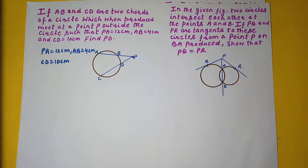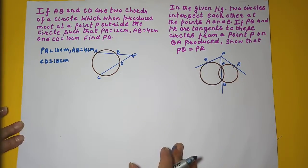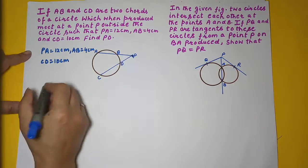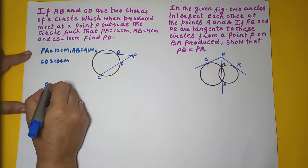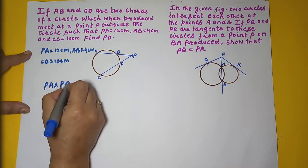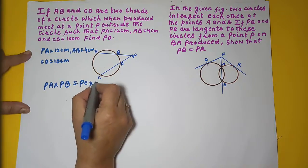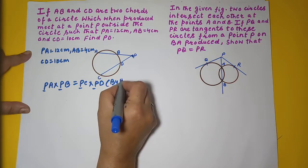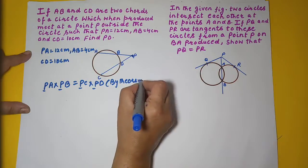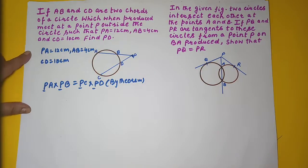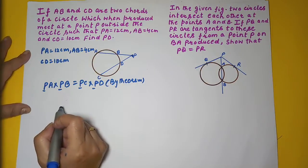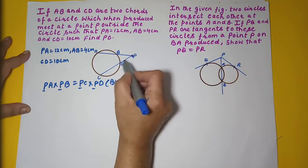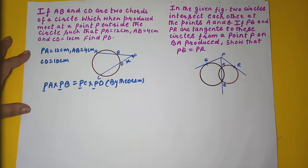We know that when two chords intersect internally or externally, the product of their segments is equal. So we write: PA × PB = PC × PD. This is our theorem. Now he wants us to calculate PD, so let's keep PD as X.